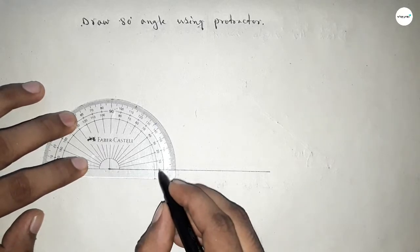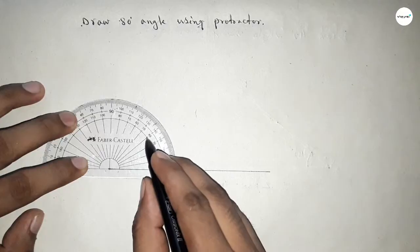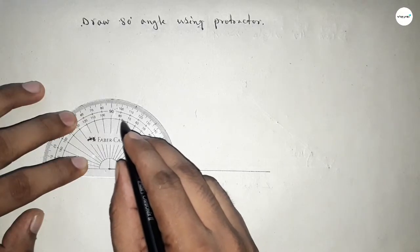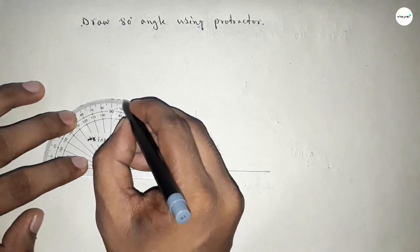So this is 0, 10, 20, 30, 40, 50, 60, 70, and this is 80. So this is 80 degrees.